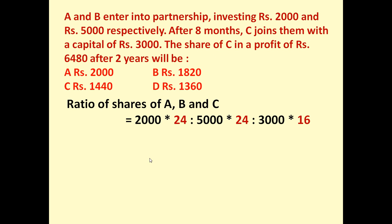Let us simplify this. We get the ratio of shares of A, B and C as 2 is to 5 is to 2. This is the ratio of investment or shares of A, B and C. So obviously, the profit ratio of A, B and C will also be in the ratio 2 is to 5 is to 2.